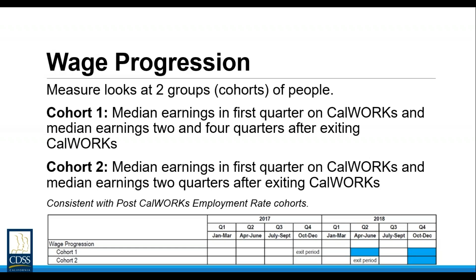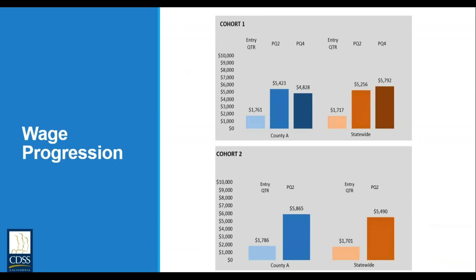For cohort two, defined as all those having exited CalWORKs in the second quarter of 2018, we again look back to the entry quarter for each individual and derive the median wage for that exit cohort, then look to the second quarter after exit — Q4 2018 — and derive the median wage for that period. Ultimately this is done to determine the change in wages for the cohorts and to help better understand the wage trajectory of CalWORKs clients at entry and in the directly post-aid period.